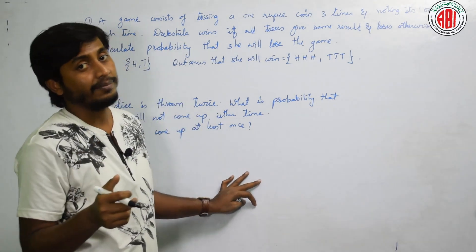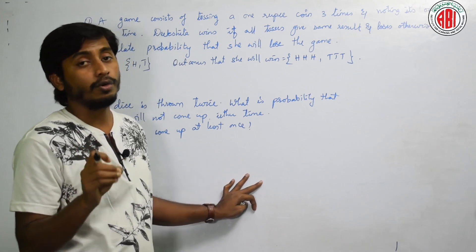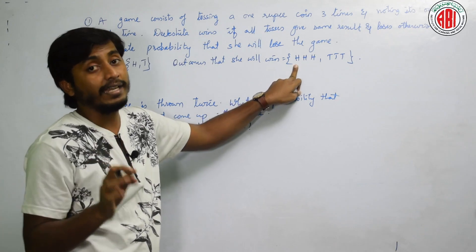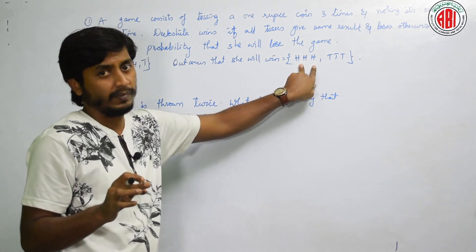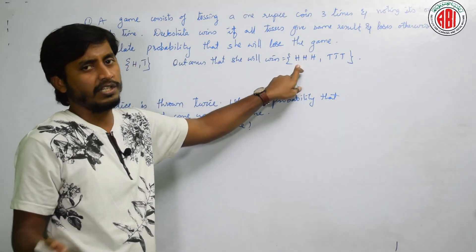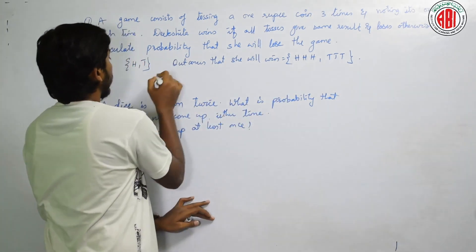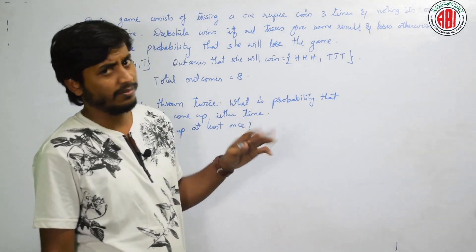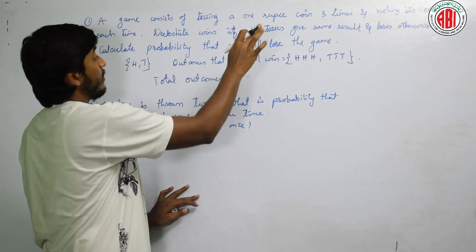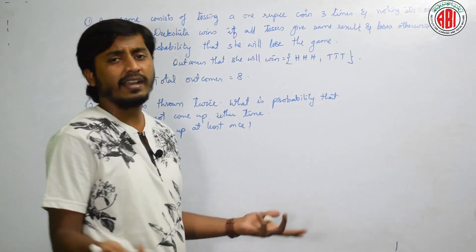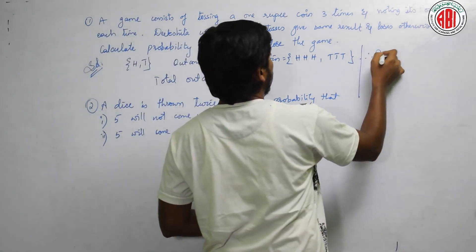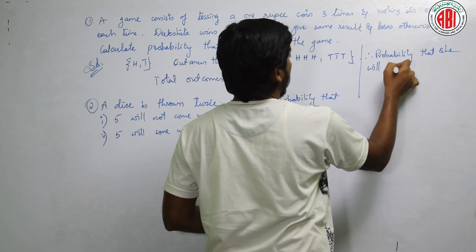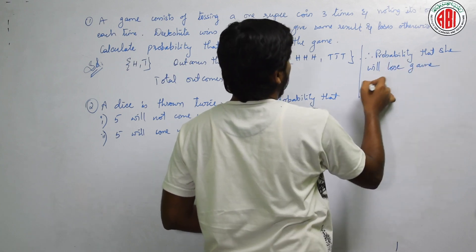2 outcomes and we have tossed it for 3 times. Then total how many outcomes we will get? We will get total combinations of 8 outcomes. With H: H H H, H H T, H T H, H T T. And with T again we will get 4 more conditions. Therefore, we will get it as total 8 outcomes. Total outcomes is equal to 8. You can write all 8 outcomes there. Now tell me what is the probability? She will lose the game. Two cases. Other than that remaining all of them are 6.